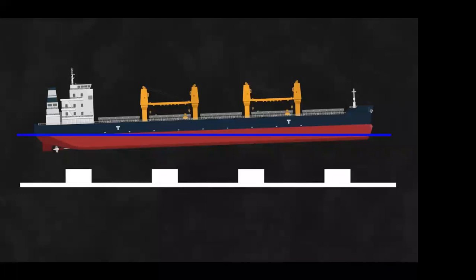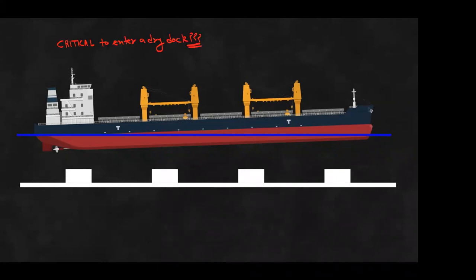Now, why does entering a dry dock become such a critical operation? Imagine the ship is inside the lock, the gates are closed, and she is about to sit on the blocks. In normal stability, we know that the force of gravity is equal to the force of buoyancy — that is our concept of floatation.